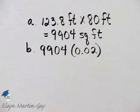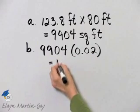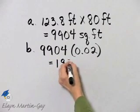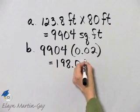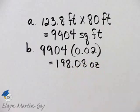And that's how we find how many ounces she needs of the insecticide. Again, I'll let you multiply. Once you multiply these two numbers, you have 198.08 and that is ounces. So this is how much insecticide she needs to order.